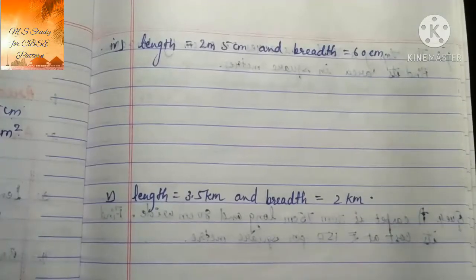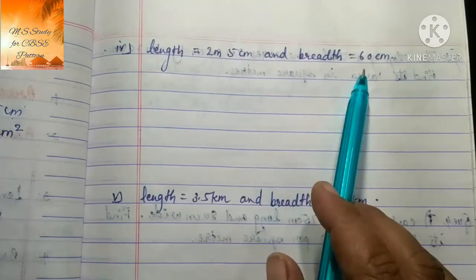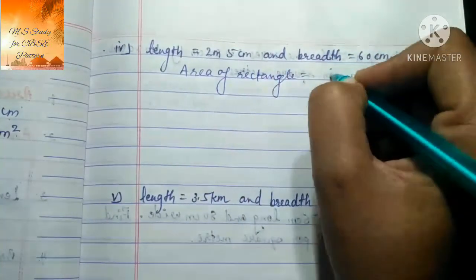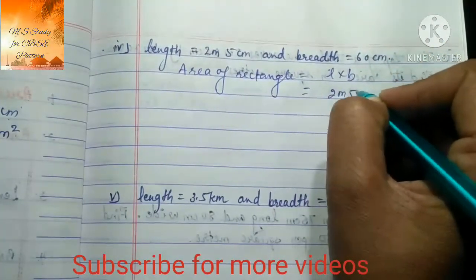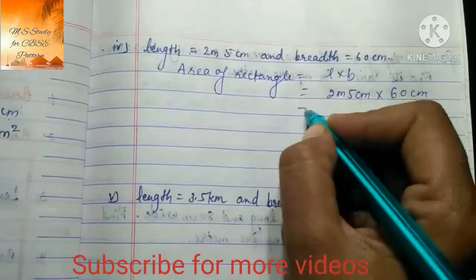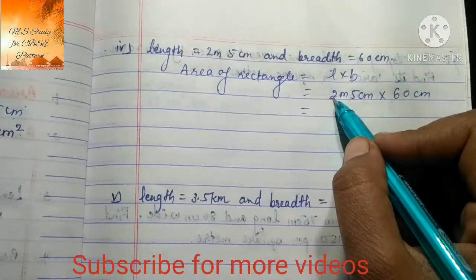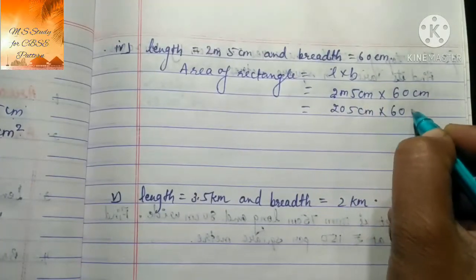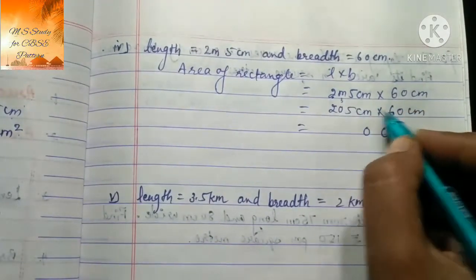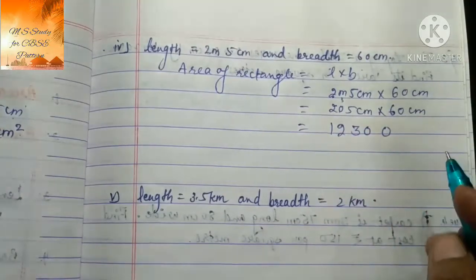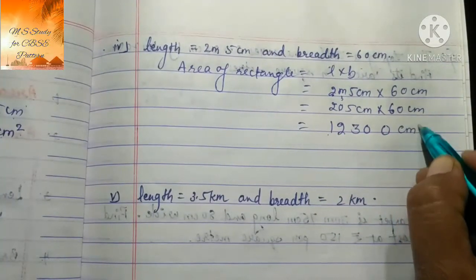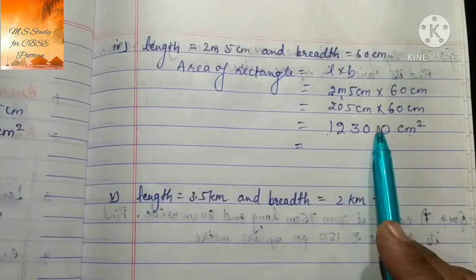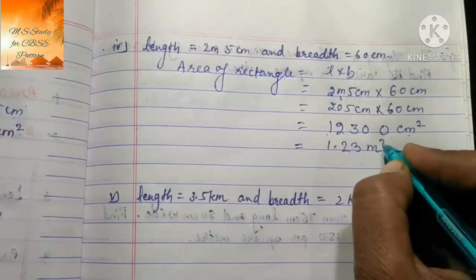Fourth part: length = 2 meter 5 centimeter and breadth = 60 centimeter। Area of rectangle = length × breadth। Meter को centimeter में convert करते हैं: 2 m = 200 cm, so length = 205 cm। 205 cm × 60 cm = 12,300 cm²। इसको meter square में convert करेंगे - 2 times 100 से divide करना पड़ेगा। Answer = 1.23 m²।